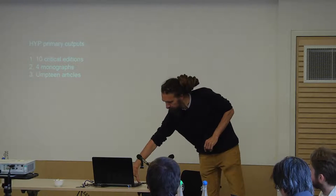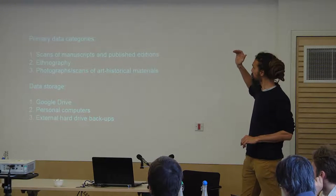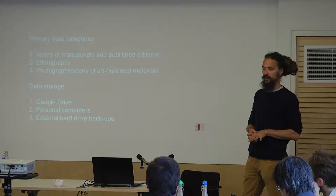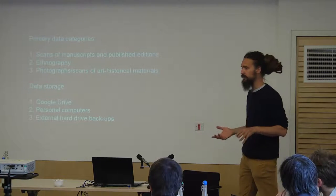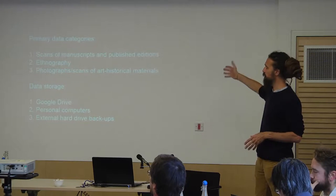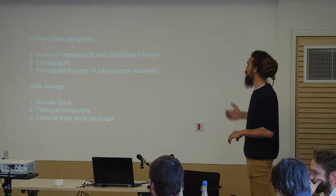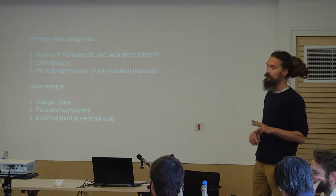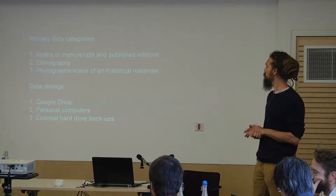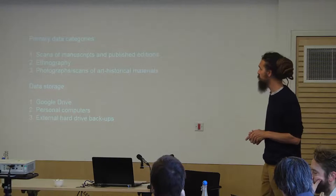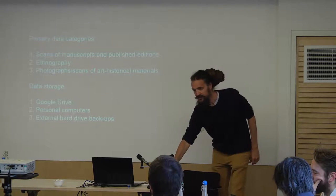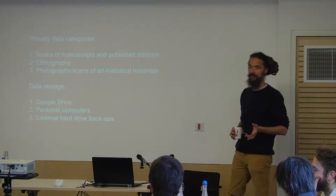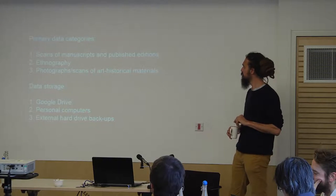Our data for producing those primary outputs — the primary data categories are scans of manuscripts and published editions. One of the project team members has spent most of the last two years in India going around manuscript libraries collecting scans where he can, and tracking down obscure published editions. The two primary methods in the project are philology — the editing of these texts — and ethnography. We've got one full-time ethnographer on the project who has spent over a year in India searching out traditional yoga practitioners, interviewing them, taking photographs, filming them, and producing ethnographic data.